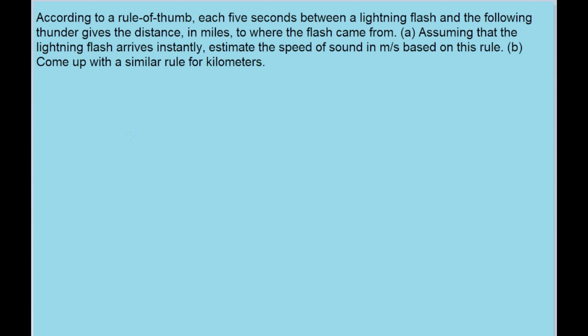for every one mile away the source of the lightning is, that's an extra five seconds before you hear the thunder. So basically, this rule of thumb is saying it takes five seconds for thunder to travel a distance of one mile.